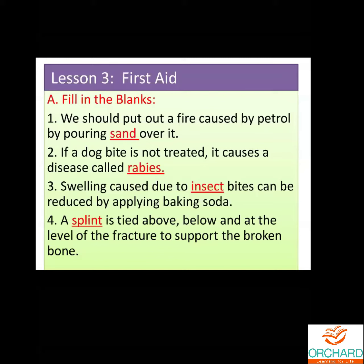Fourth: a dash is tied above, below, and at the level of the fracture to support the broken bone — answer: splint. Do you remember the picture? Splint is different from sling. A splint is a supportive thing worn on the fractured area. A sling is used if someone has a fracture on their arm — it supports the arm.